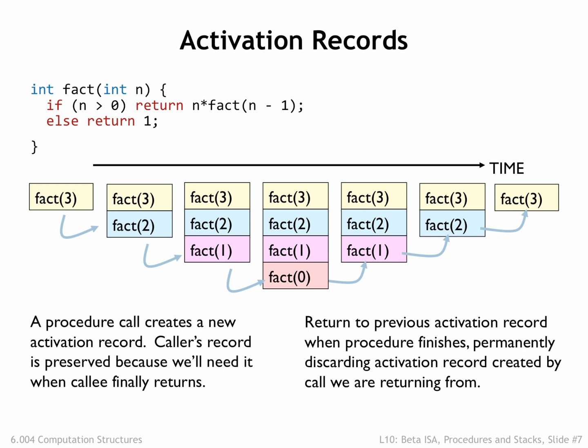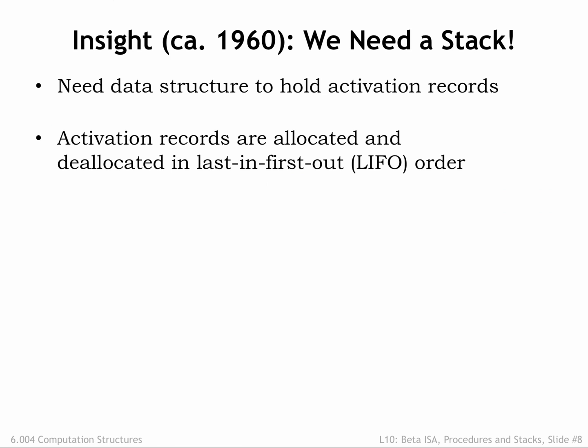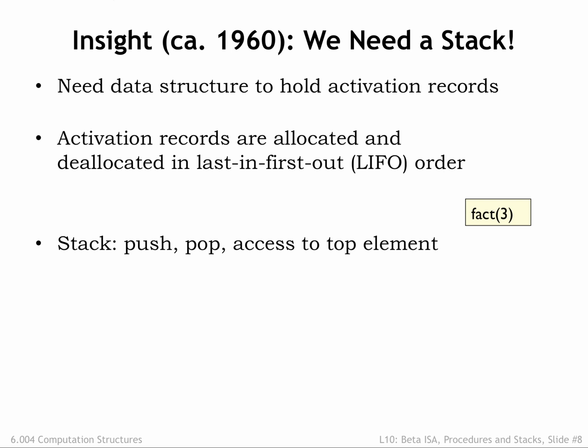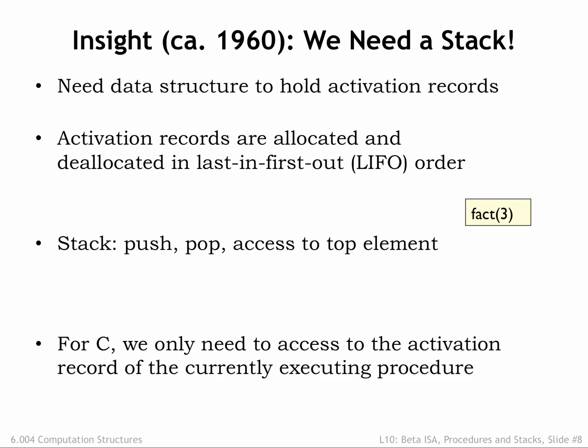What we need is a storage scheme that efficiently supports the allocation and deallocation of activation records. Early compiler writers recognized that activation records are allocated and deallocated in last-in, first-out order. So they invented the stack, a data structure that implements a push operation to add a record to the top of the stack and a pop operation to remove the top element. New activation records are pushed onto the stack during procedure calls and popped from the stack when the procedure call returns. Note that stack operations affect the top record on the stack. C procedures only need to access the top activation record on the stack, while other programming languages, for example Java, support accesses to other activation records. The stack supports both modes of operations.